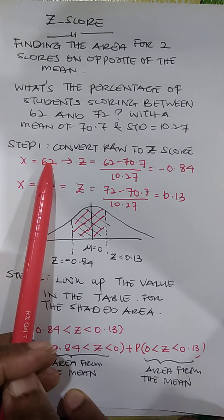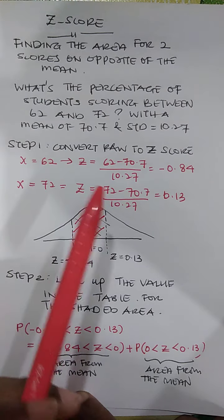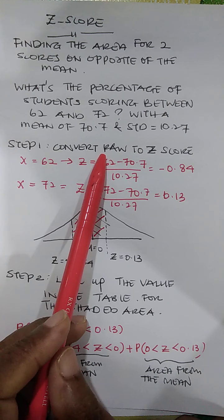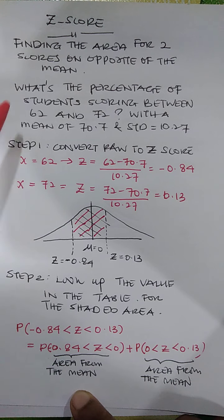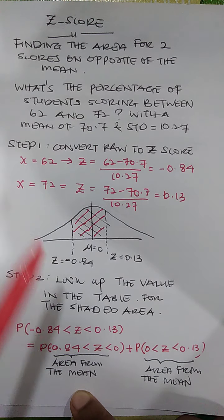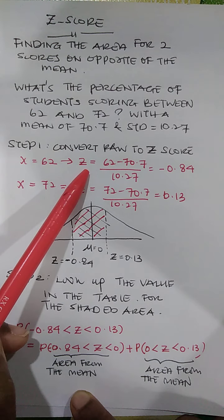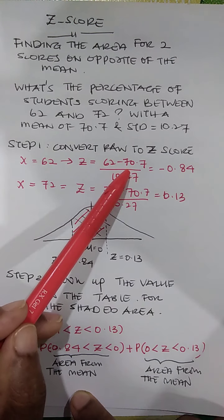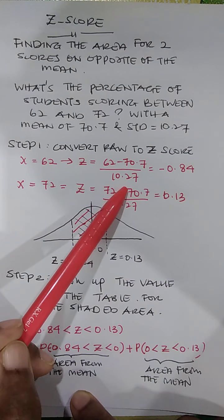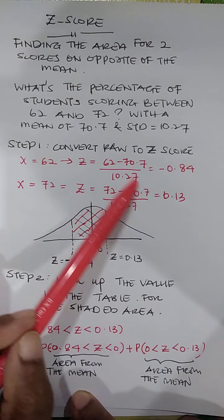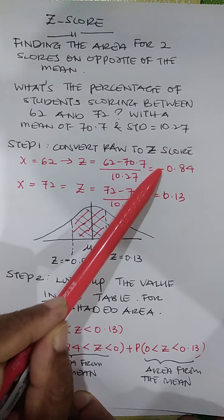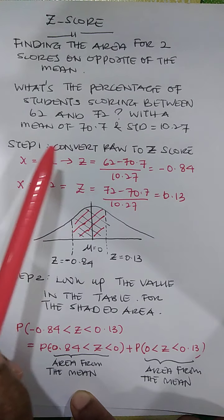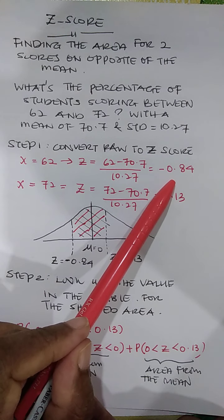So what is step one? Similar for any other Z score, firstly you need to convert the raw score into the Z score. So what are the raw scores I have? 62 and 72. So for 62, I convert it to the Z score. 62 minus the mean 70.7 divided by standard deviation 10.27, I get negative 0.84.